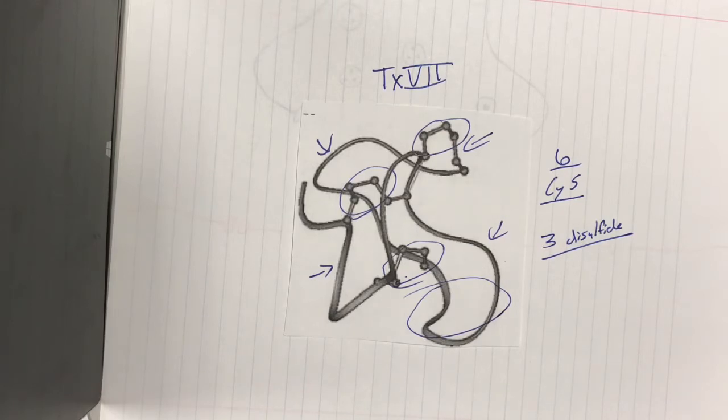TX7 has evolved to selectively inhibit calcium channels in their prey, which means that TX7 only affects other species. It doesn't affect conus textile, its own species.